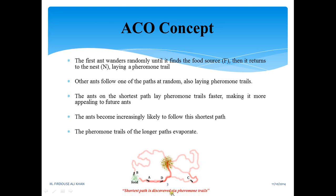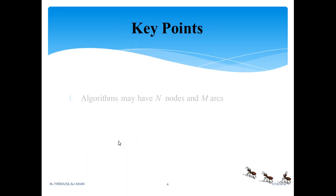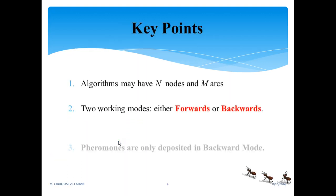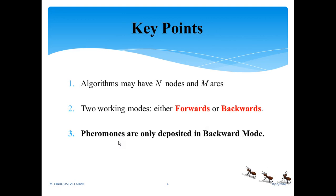Now the key points that can be observed in this ACO algorithm: there may have N nodes and arcs, two working modes will be there, either forward or backward, but pheromone trails are only deposited in backward mode.